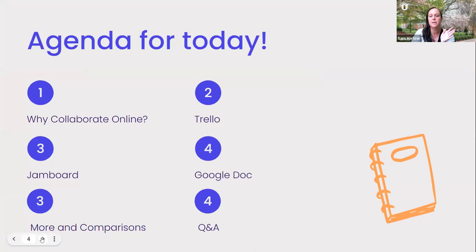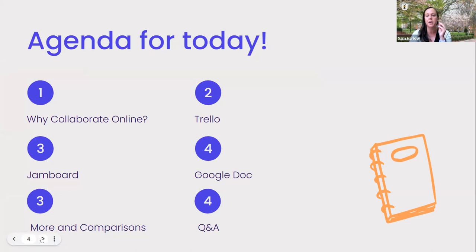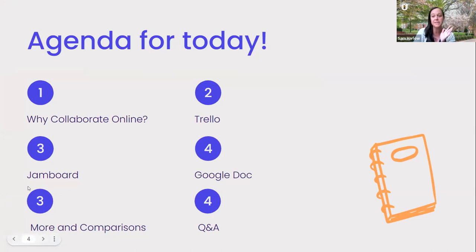We're going to start with why we should collaborate online — casual — we're going to do a poll and talk through it as a group. Then we're going to talk about Trello, Jamboard, Google Docs, and I also added in pages on Padlet and Google Chat because those are really great collaborative tools. Then we'll do comparisons and have plenty of time for Q&A.